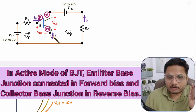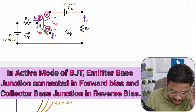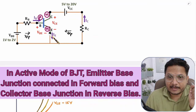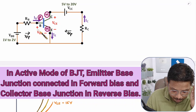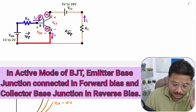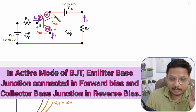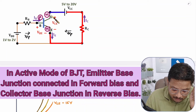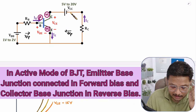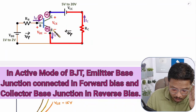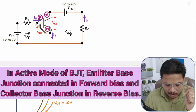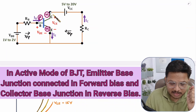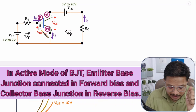The base-emitter junction should be in forward bias. The base is P-type and the emitter is N-type. The P-type is connected to the positive terminal of the battery and the N-type to the negative terminal, so VBB keeps the base-emitter junction in forward bias. In active mode, the collector-base junction should be in reverse bias. The collector is N-type connected to the positive terminal of VCC, keeping the collector-base junction in reverse bias. This is how BJT is kept in active mode.